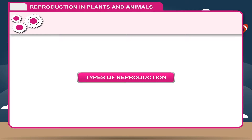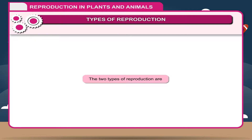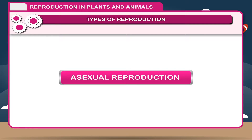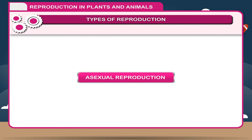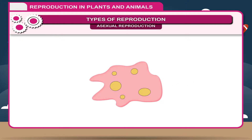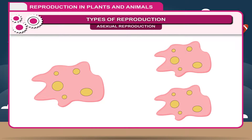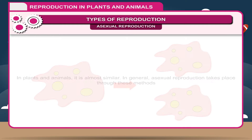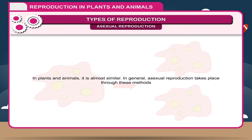Types of Reproduction. The two types of reproduction are asexual reproduction and sexual reproduction. Asexual reproduction is a type of reproduction that does not involve the fusion of male and female sex cells. In plants and animals, it is almost similar. In general, asexual reproduction takes place through several methods.